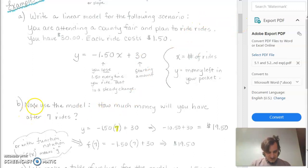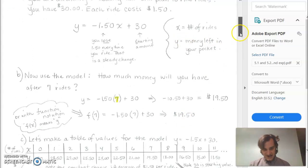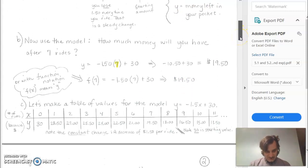So with that in hand, we could come down here and talk about this example that says how much money will you have after seven rides. And we just plug seven in for our input or our x. And in that case, we end up with $19.50 left over. And we did all this in the last class.